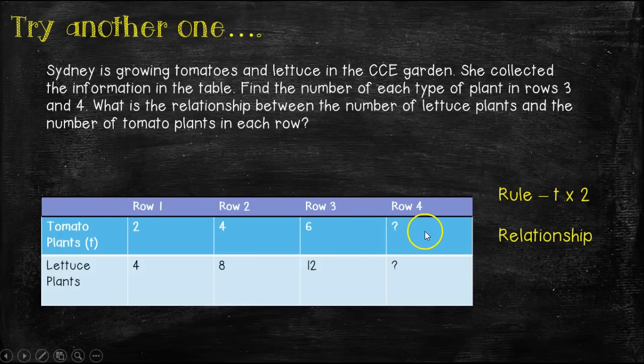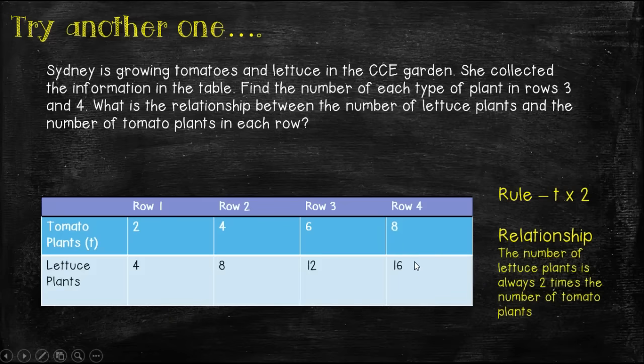Now we have to figure out row four. Again, we're adding two. So we know that there would be six plus two tomato plants in row four, which would give us eight. And then the rule is eight times two, which would be 16 lettuce plants. So the relationship is the number of lettuce plants is always two times the number of tomato plants.